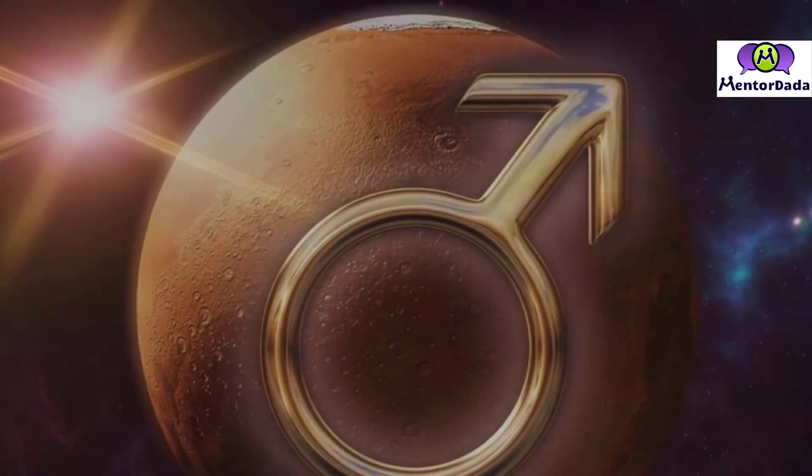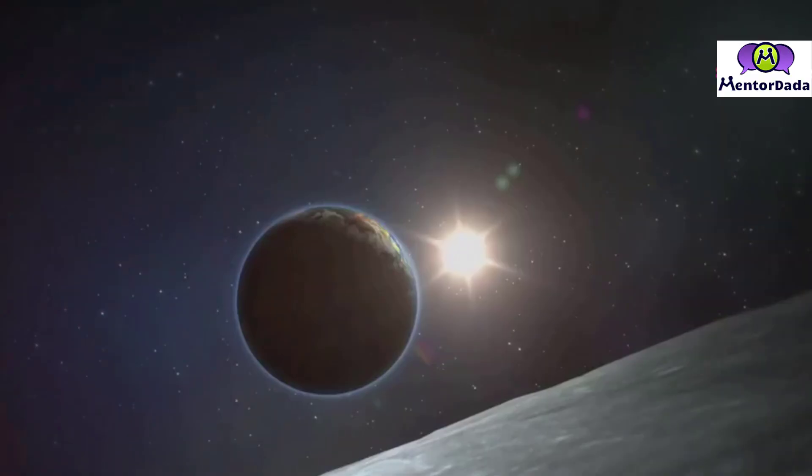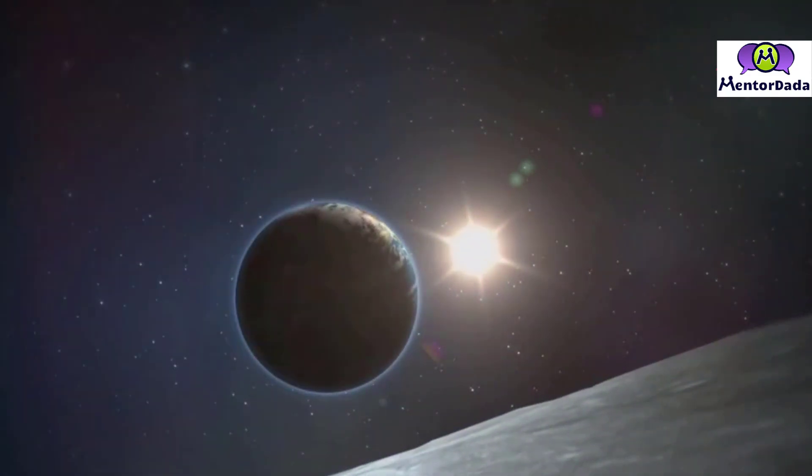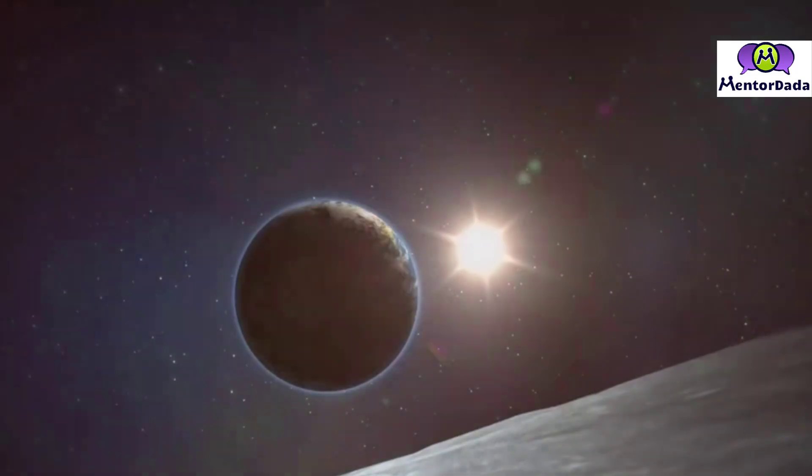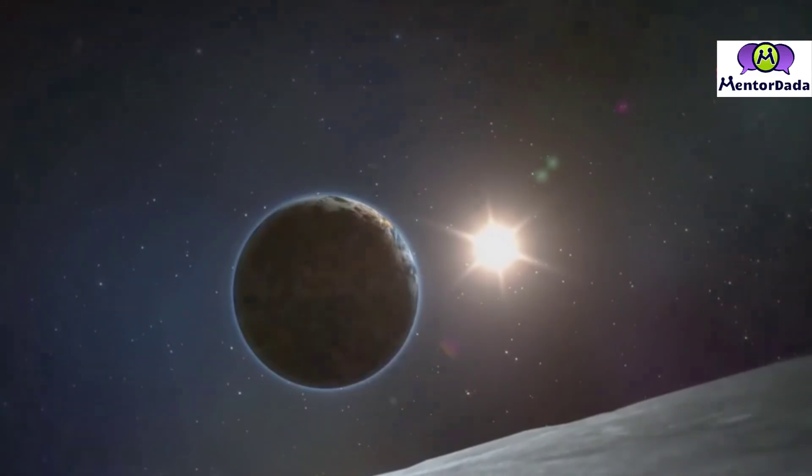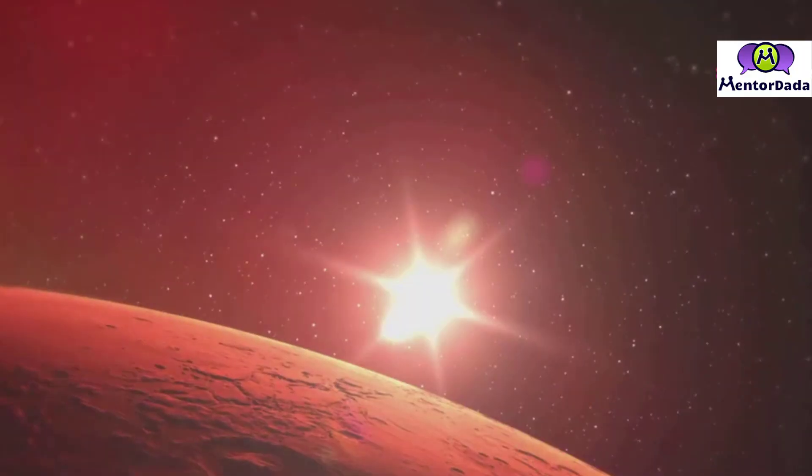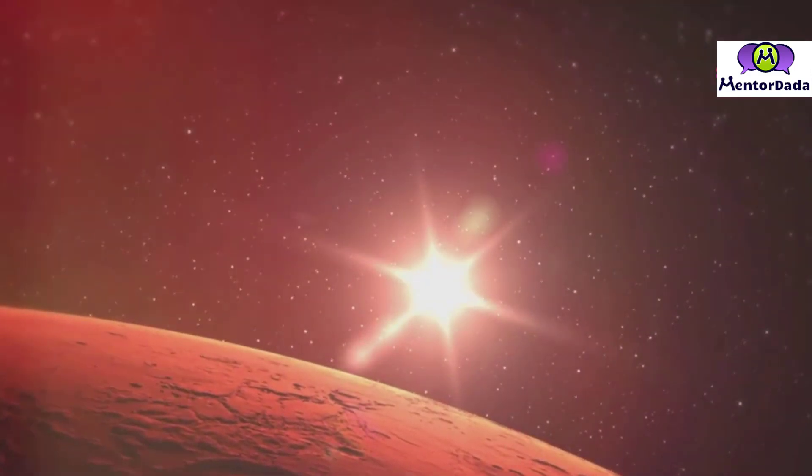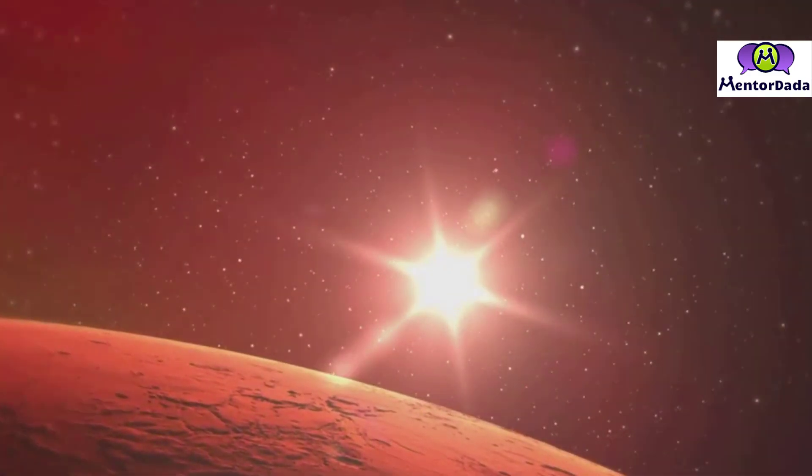Mercury, the smallest and innermost planet in our solar system, is a celestial speedster zipping around the sun at an astonishing pace. This elusive world, named after the Roman messenger god, is often difficult to spot due to its proximity to the sun. But during the June 3rd alignment, it will be visible just above the horizon in the early morning sky.